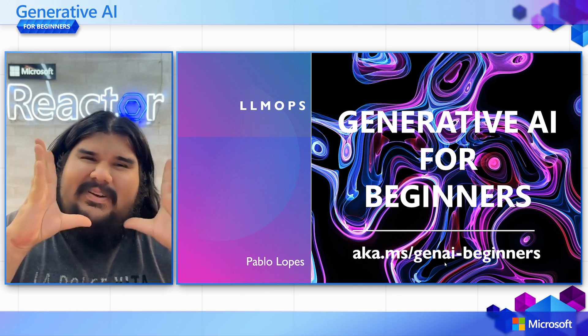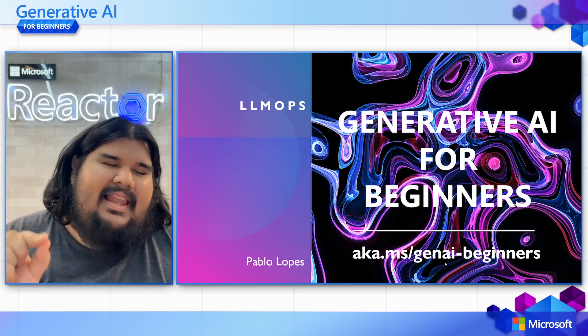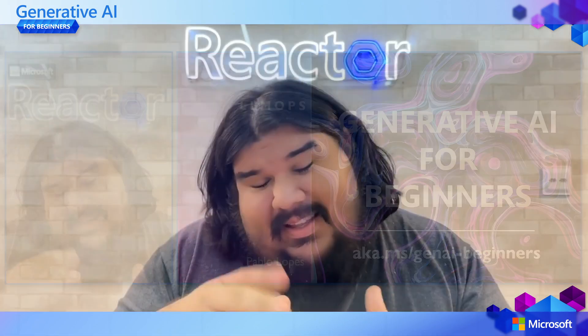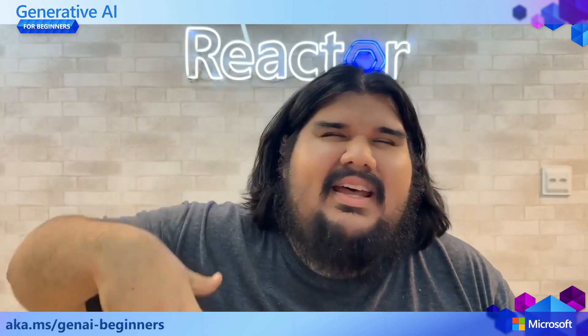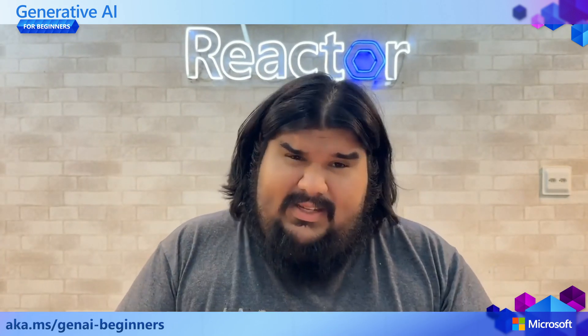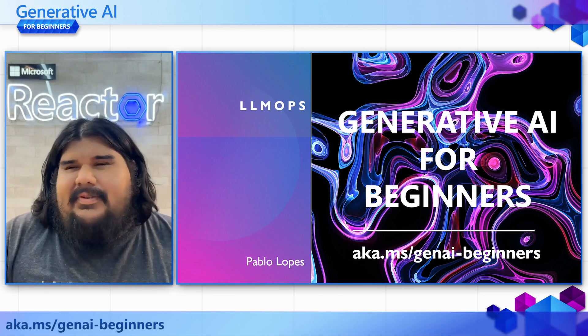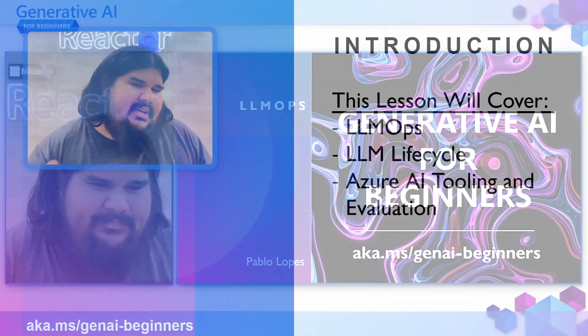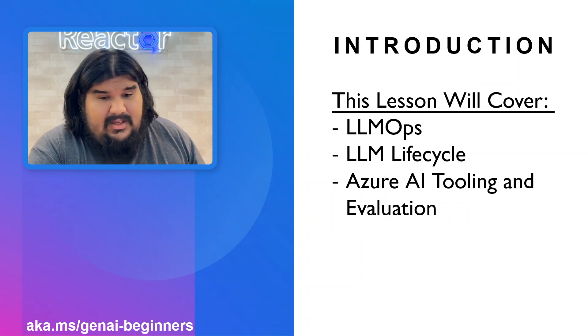Now that we are coming to the end part of the series, I want to tell you a little bit about LLMOps. Because we've talked about a lot of theoreticals — how to use the outputs of all your generative AI systems into new systems — but that's not always the case. You need to develop systems, make them scale, and take care of operations. What we're going to cover today: LLMOps, the LLM lifecycle, Azure AI tooling, and evaluation.